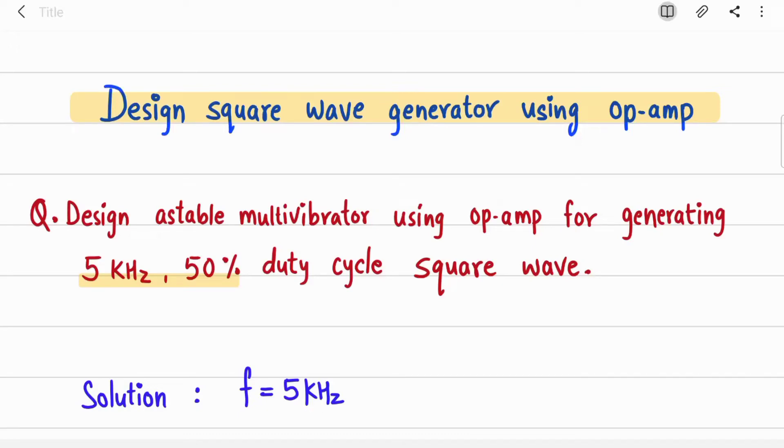Hi guys, welcome back to my channel. In this video we are going to solve design numericals of a stable multivibrator using op-amp, or you can say square wave generator. These types of questions can be asked in exams for around 5 marks, so do check out multivibrator design numericals before going to exam and grab these 5 to 10 marks.